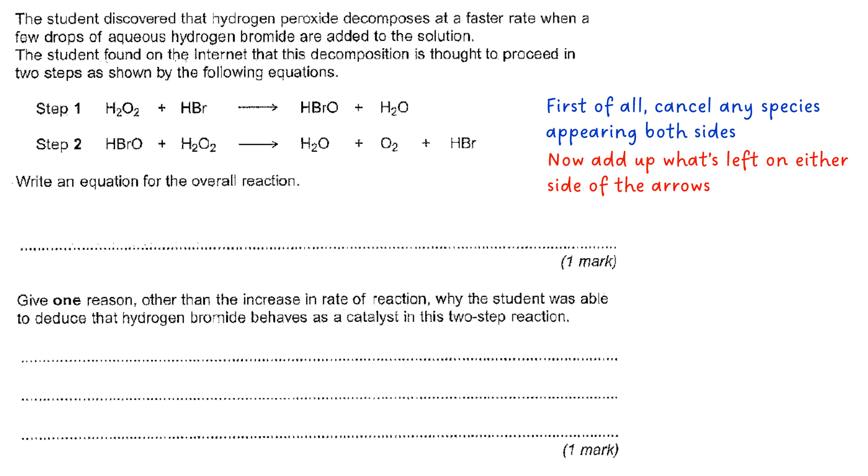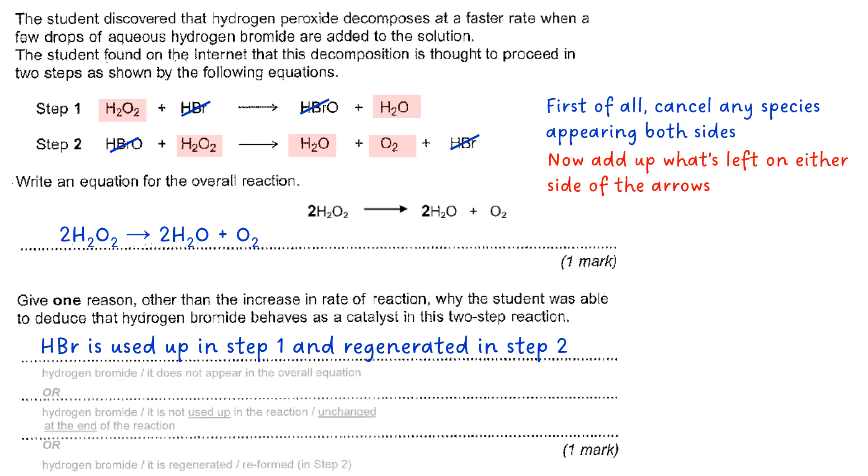Let's look at how to do the equation for the overall reaction. First of all, cancel any species that appear on both sides. Secondly, you look at what's left and add all of that together, which gives you 2H₂O₂ going to 2H₂O plus O₂. One reason other than the increase in the rate of reaction why the student was able to deduce that hydrogen bromide behaves as a catalyst is it's used up in step one and regenerated in step two.